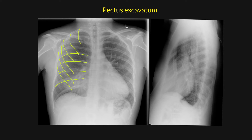If you look on the lateral view, you can see that the sternum is depressed. Here is the sternum, and it's clearly depressed with respect to the anterior chest wall.